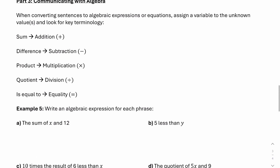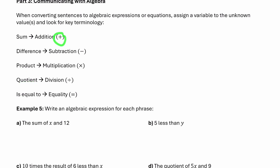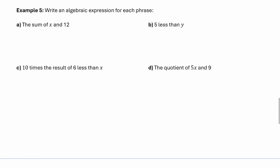Now the last thing we want to do is practice communicating with algebra. When converting sentences to algebraic expressions or equations, we assign a variable to the unknown and look for key terminology such as sum, difference, product, quotient, or 'is equal to,' and then use the appropriate operation or symbol. In example 5: the sum of x and 12 means we're adding them, so the expression is x plus 12.